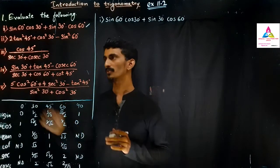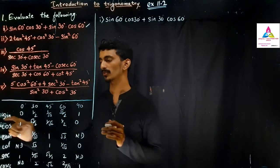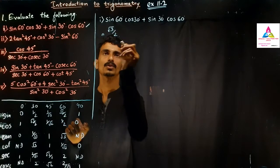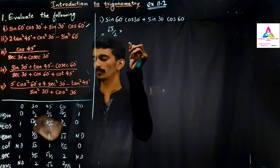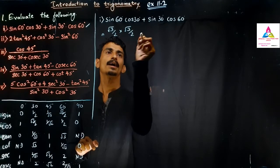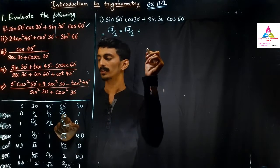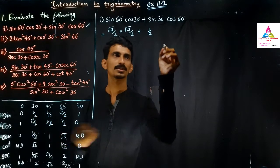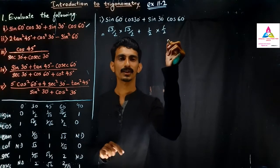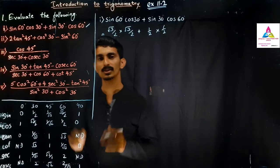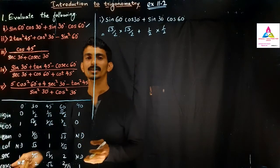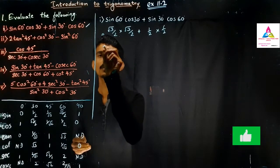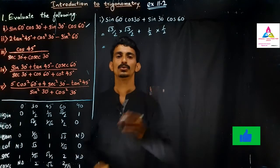Now let us solve Question 1. Sine 60° = √3/2, cos 30° = √3/2, sine 30° = 1/2, cos 60° = 1/2. In an exam, you can write the table in rough and copy values quickly, since one question will typically be asked based on these standard angles.